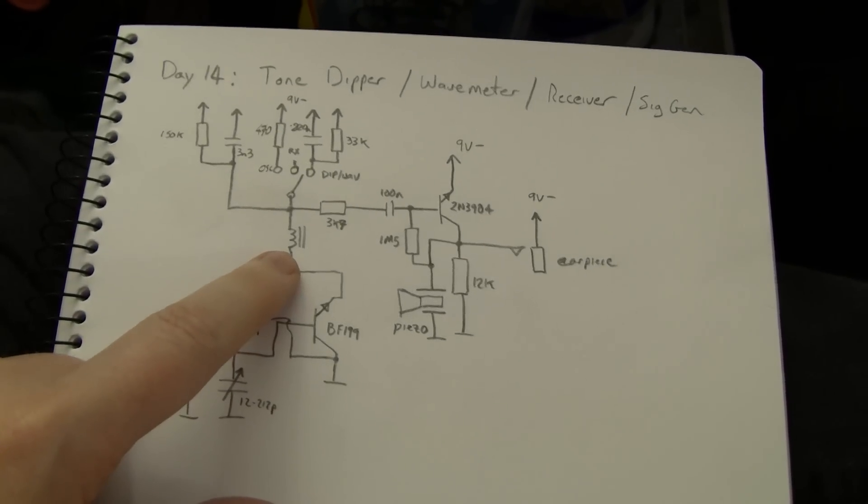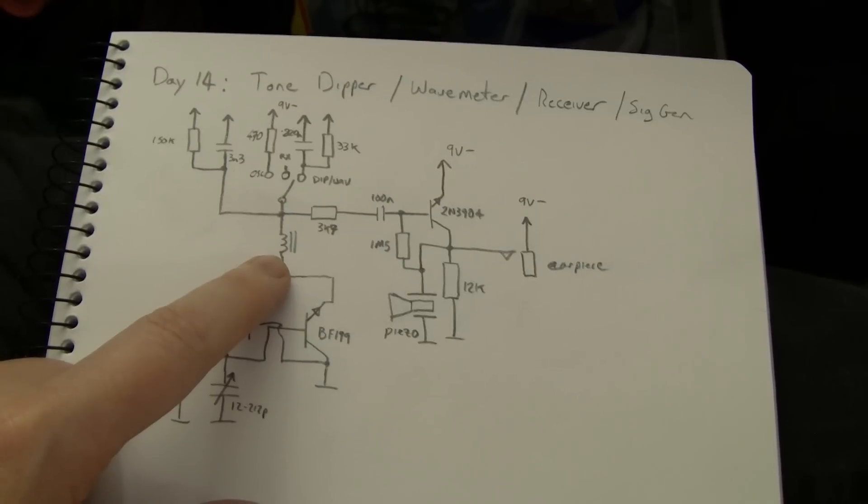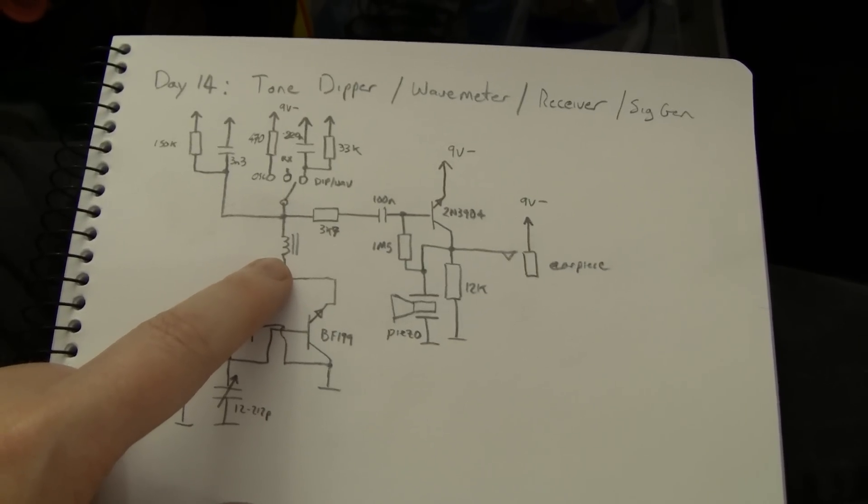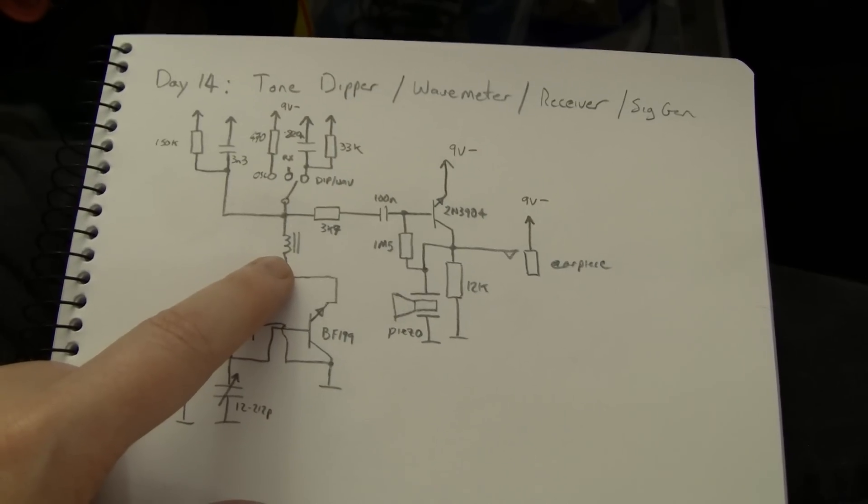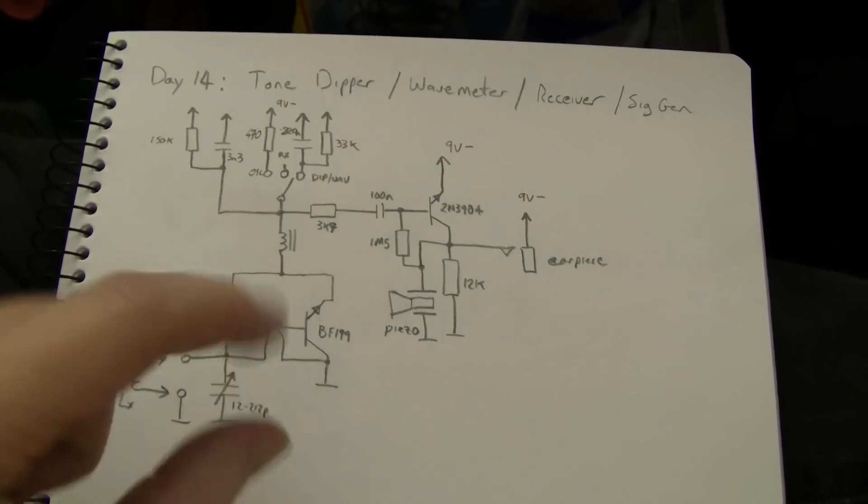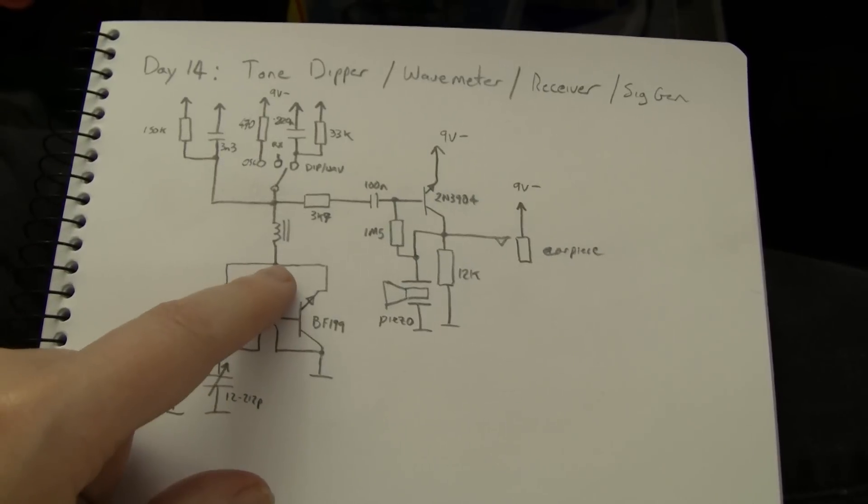Ah, this inductor is a choke, I haven't actually measured it yet, it's about 15 turns, on a very small FT 23-43, or 25-43, it's one of the smallest little ferrite rings you can get. It works pretty well for the VHF end of things.